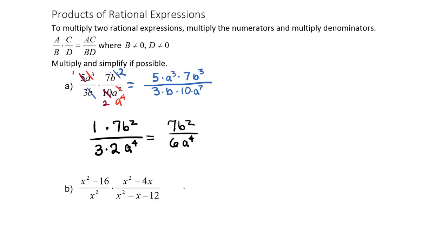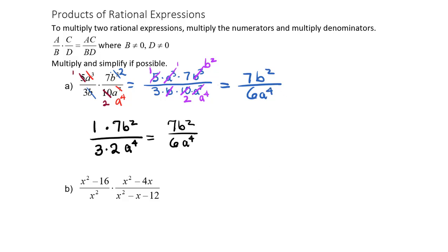Now let's do this another way. You can reduce them as the list instead of reducing them at the beginning. So I'll have a 1 and a 2 for the 5 and the 10. The a³ will reduce out — that will be a 1 — and a⁷ will reduce to a⁴. b³ will reduce with the b and will have b². And 3 and 7 don't reduce. That will give me 1 times 1 times 7 times b², so 7b², over 3 times 2 times a⁴, which gives me 6a⁴. You can pick which way you like better — the first method goes a little bit faster, but it's up to you.